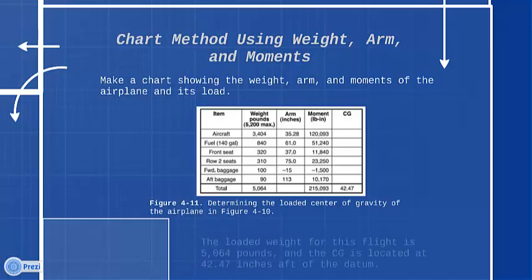The loaded weight for this flight is 5,064 pounds, and the CG is located at 42.47 inches aft of the datum.